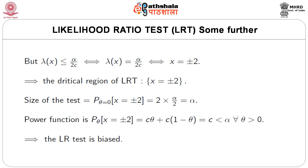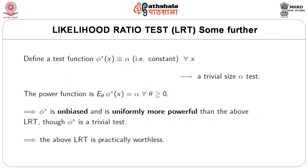In this example, the power is less than the size, meaning the LRT considered here is biased. Now define a test function phi*(x) = alpha (a constant) for all x. Clearly this is a trivial size-alpha test. The power function of this test is E_theta[phi*(X)] = alpha for all theta ≥ 0. So phi*, even being a trivial test, is unbiased and uniformly more powerful than the above LR test. This means the above LR test is practically worthless.